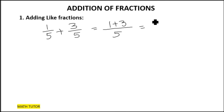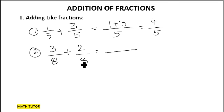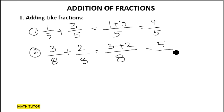One plus three equals four, and the denominator is five. So the answer is four-fifths. Let us see one more example: three-eighths plus two-eighths. As both are like fractions, the denominator will remain the same — eight — and you just add both the numerators: three plus two equals five. So the answer is five-eighths.